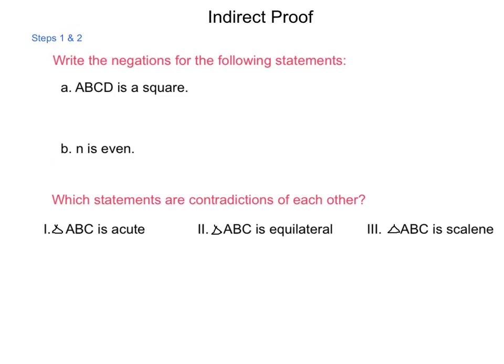First, we're going to take some statements and practice writing their negations. So if ABCD is a square, the contradiction to this or the negation would be simply that ABCD is not a square. It could be any other quadrilateral, just not a square.